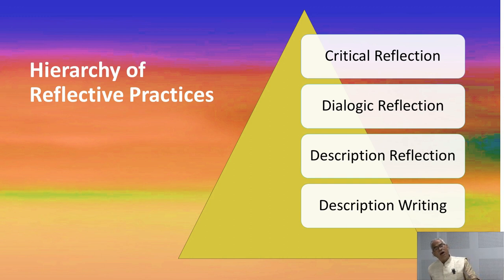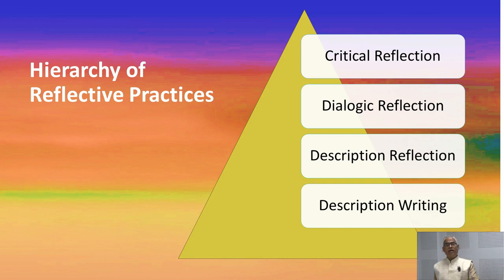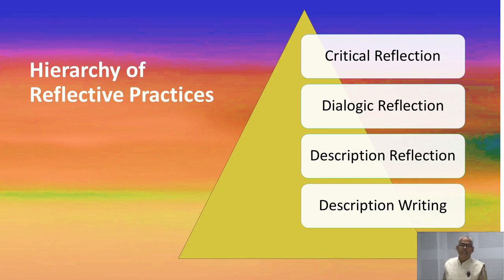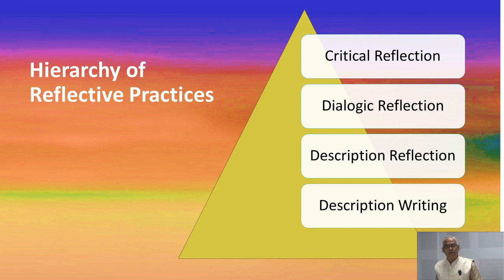The highest order of reflection is critical reflection. Critical reflection means reflecting on one's own experiences, and when exposed to others' reflections, trying to reconstitute, review, and think critically about how to reorganize or reconstruct one's own thinking process, taking into consideration the global perspective and the views and visions of others.